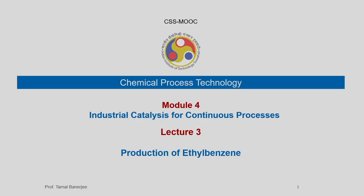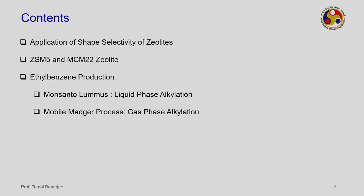In today's lecture, we will discuss the production of ethyl benzene as an example where the shape selectivity of zeolite is exploited to obtain a certain product — ethyl benzene. We will discuss two different catalysts: ZSM-5 and MCM-22. These are trade names given after the companies where they were patented.